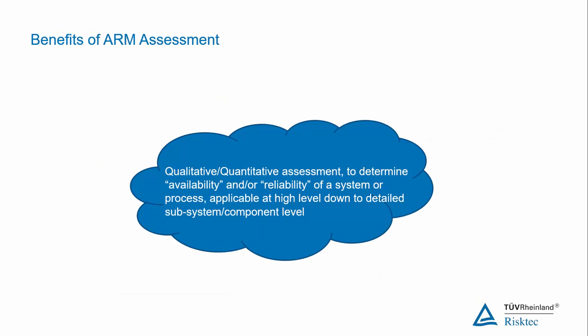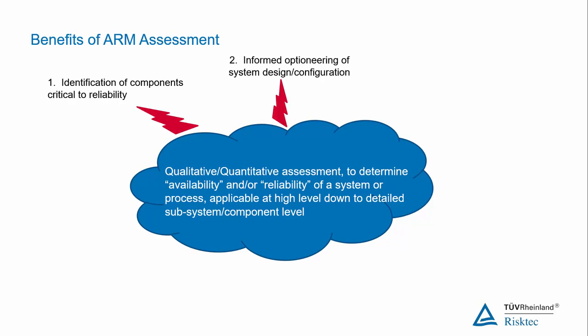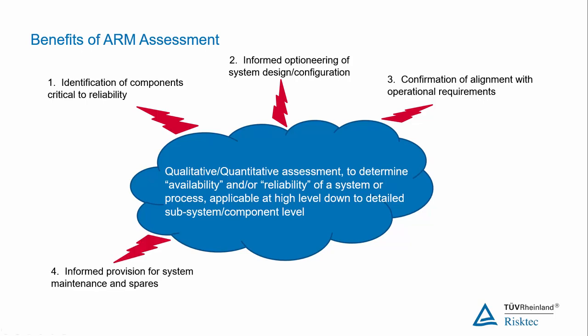ARM assessment can be utilised at any stage of the project lifecycle and provides a number of benefits. For example, it might provide justification to expand or modify the design to increase capacity or provide additional redundancy. It provides assurance that the design can meet its operational target prior to undertaking expensive manufacture and installation activities. It allows the development of maintenance strategies — for example, informed resourcing decisions for employment of maintenance personnel and the use of sensitivity analysis to compare loss of availability when optimising spares holdings. It also enables informed strategic financial decision making in support of the improvement of process or system configuration reliability and cost effectiveness.